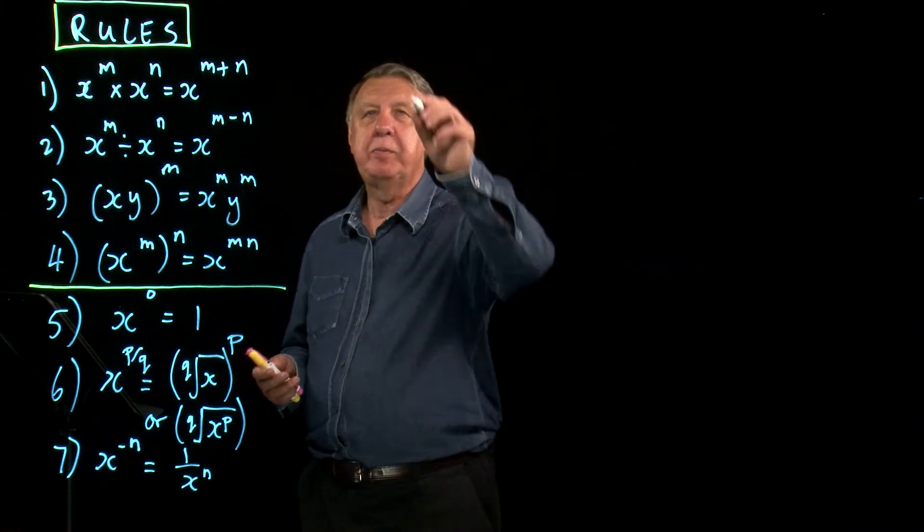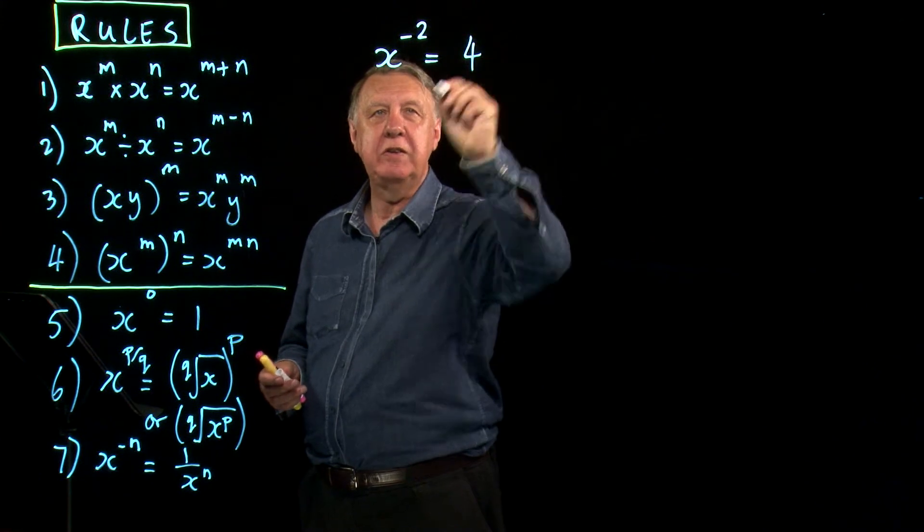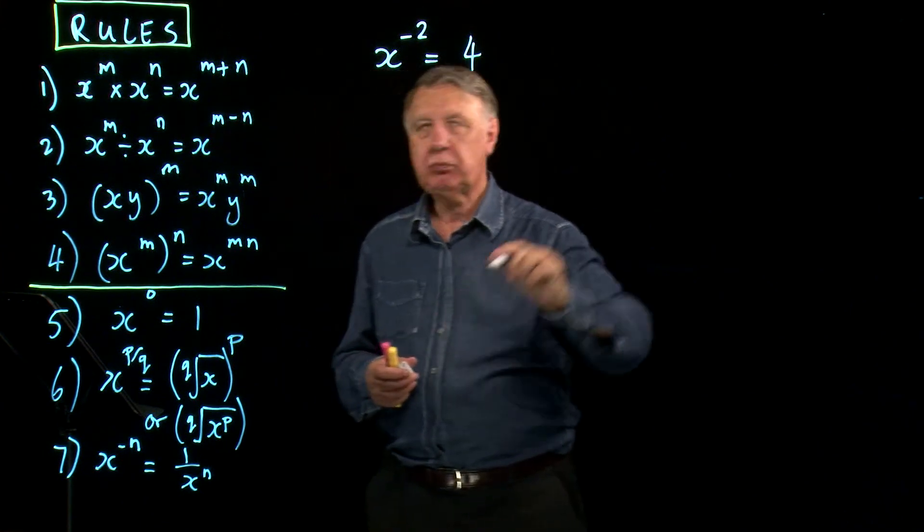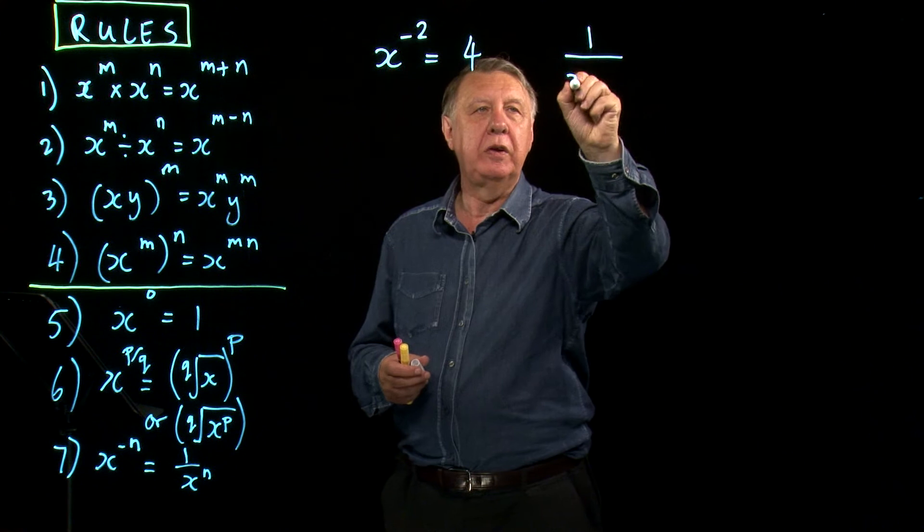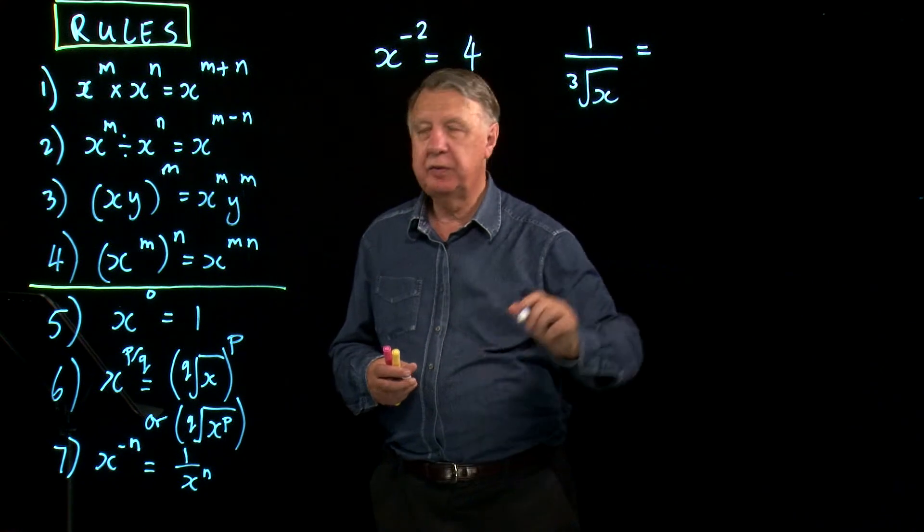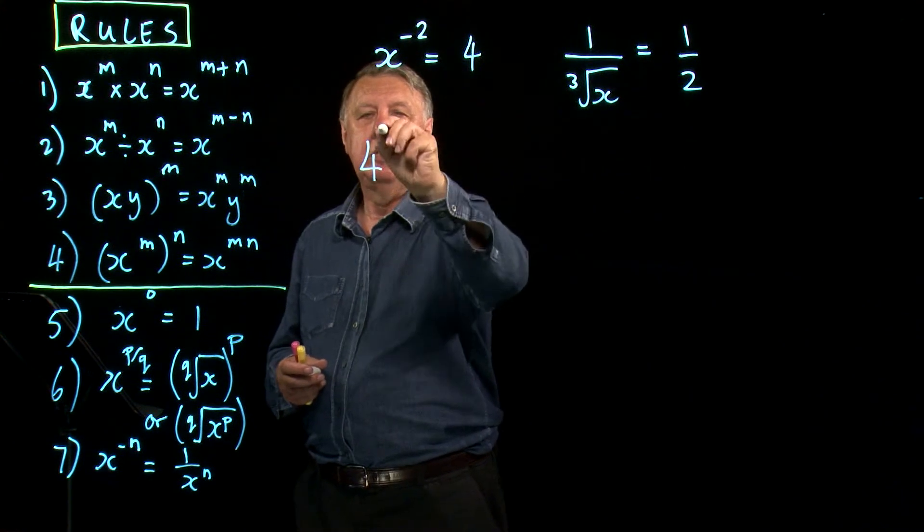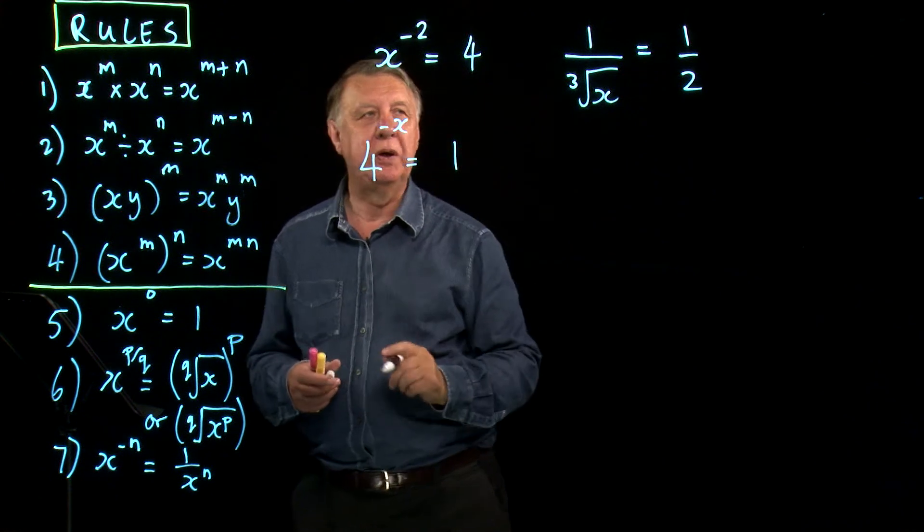So might be something like, find x in these situations: x to the negative two equals four, one over the cube root of x equals a half, and four to the negative x equals one.